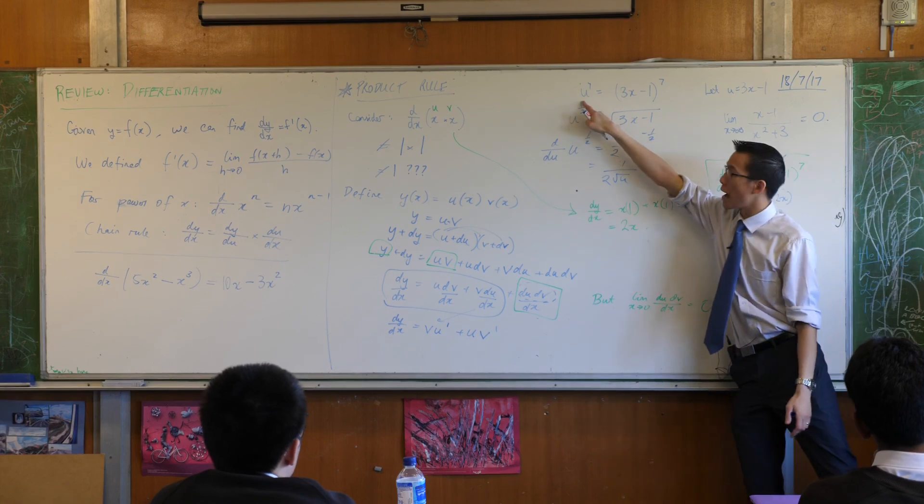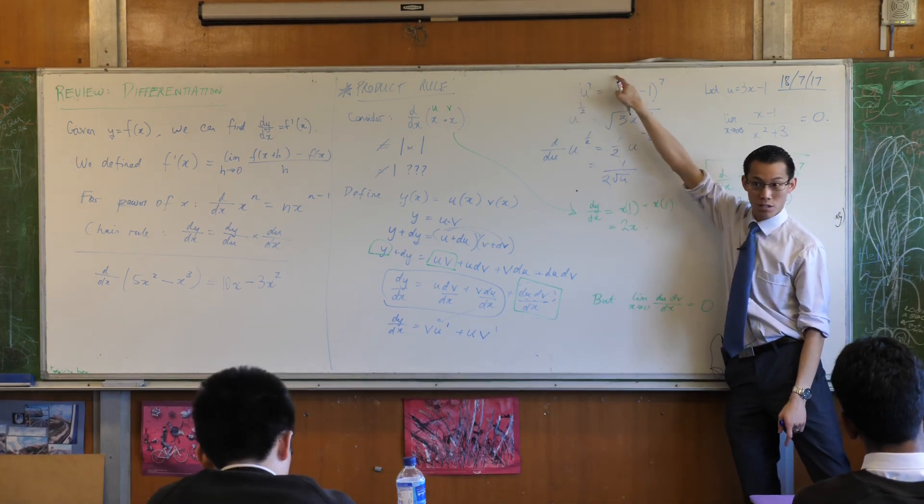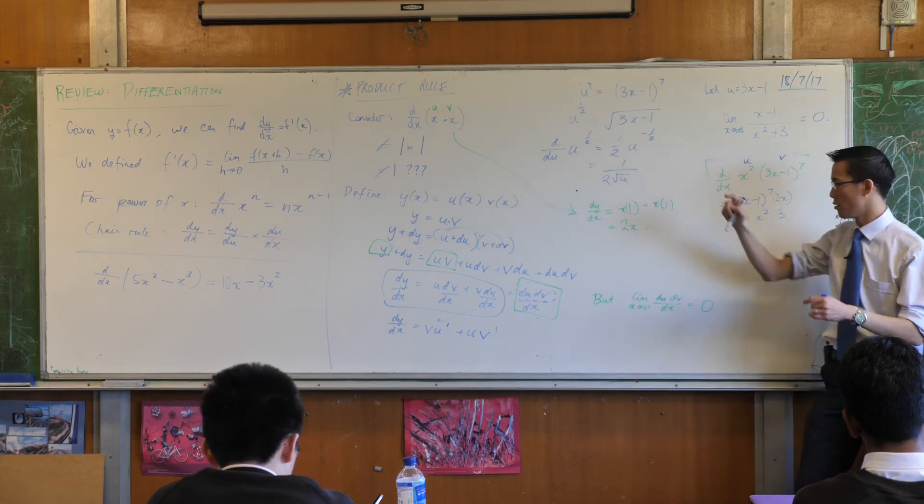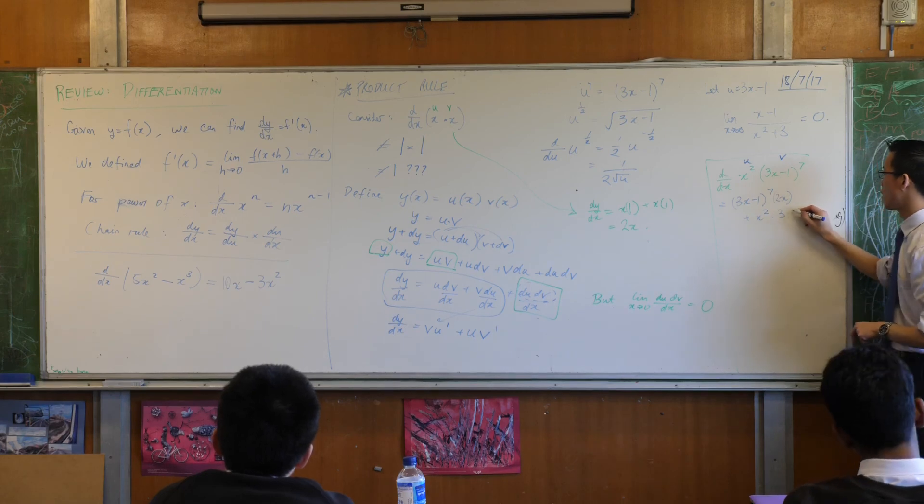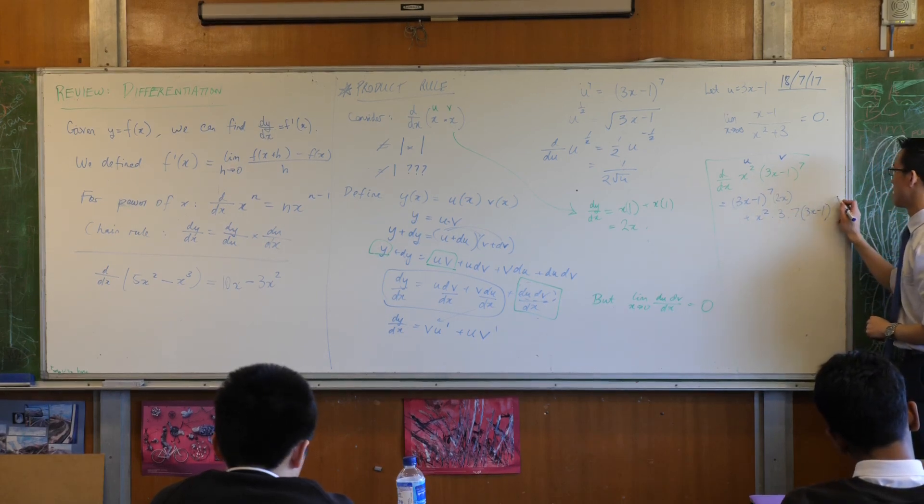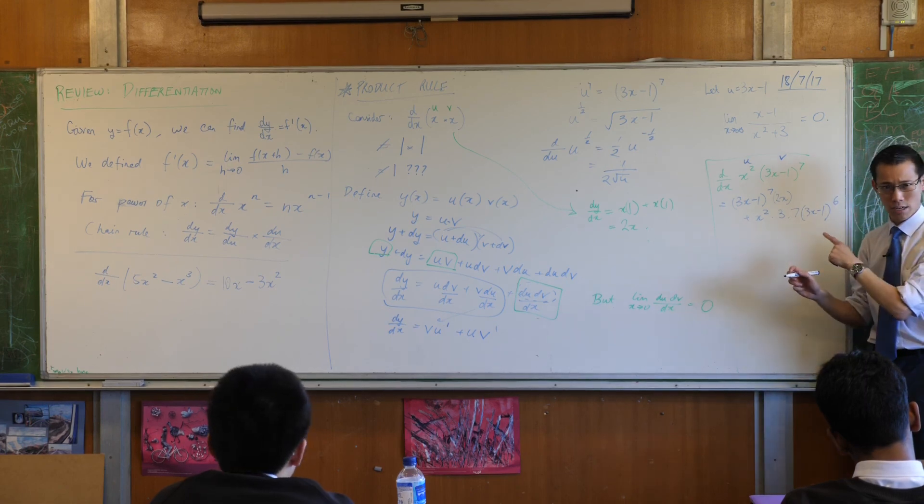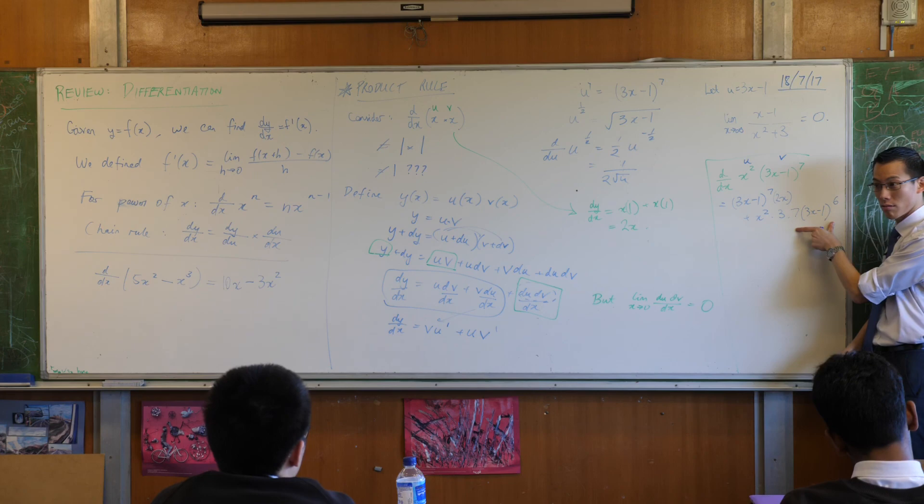What's the outside? Well, it's something to the power of 7. So you'd bring the power down and then you reduce the power by 1. 7u to the 6. Do you agree? So this is 7u to the 6. See what I did there? There's the inside derivative. There's the outside derivative.